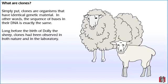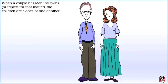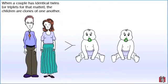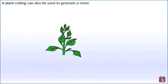In other words, the sequence of bases in their DNA is exactly the same. Long before the birth of Dolly the Sheep, clones had been observed in both nature and in the laboratory. When a couple has identical twins, or triplets for that matter, the children are clones of one another. A plant cutting can also be used to generate a clone.